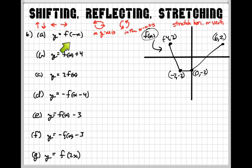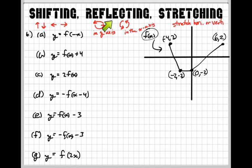Now let's look more specifically at what happens when we put a negative on the x versus putting a negative on the f of x — those are different. When you deal with negatives, those are reflections. This one, since it's going to change the x values, it's going to make the point (6, 2) become (negative 6, 2). So it's going to be over here — 1, 2, 3, 4, 5, 6 — it's going to be right there instead of over there.